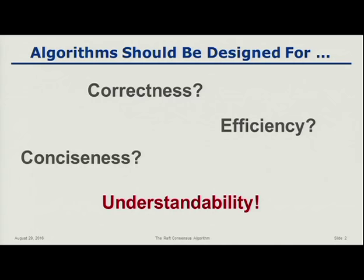Algorithms need to be understandable because it's hard to get benefit from an algorithm unless it's actually implemented. The process of implementing an algorithm always changes it — it always has to be extended or adapted or modified to fit its environment. If the people implementing the algorithm can't understand it and don't have good intuitions about it, they won't be able to implement it properly. This is particularly true in distributed systems where the algorithms are pretty complicated to begin with.